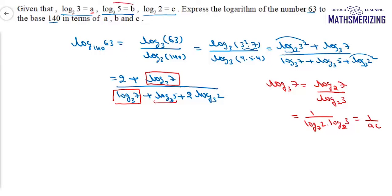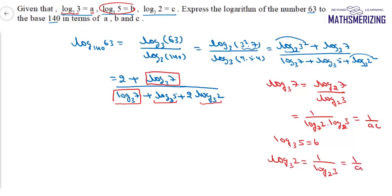Log 5 base 3 is given as b, so log 5 base 3 is simply b. Log 2 base 3 is 1 over log 3 base 2, and log 3 base 2 is a, so log 2 base 3 is 1 upon a. Now I can write the full expression: the numerator is 2 plus 1 upon ac, and the denominator is 1 upon ac.